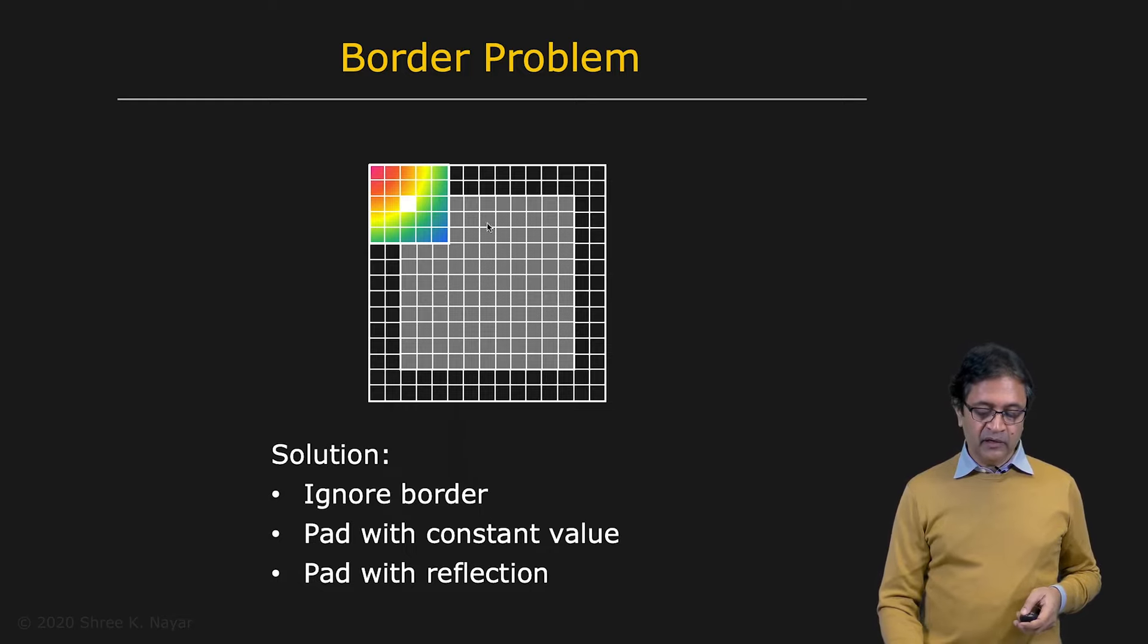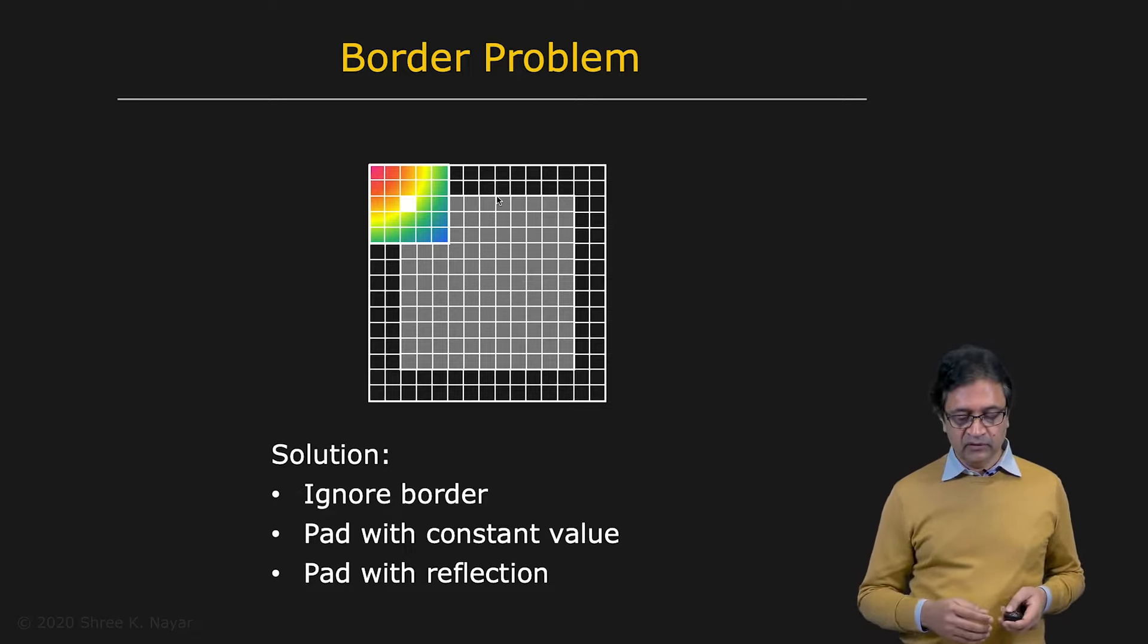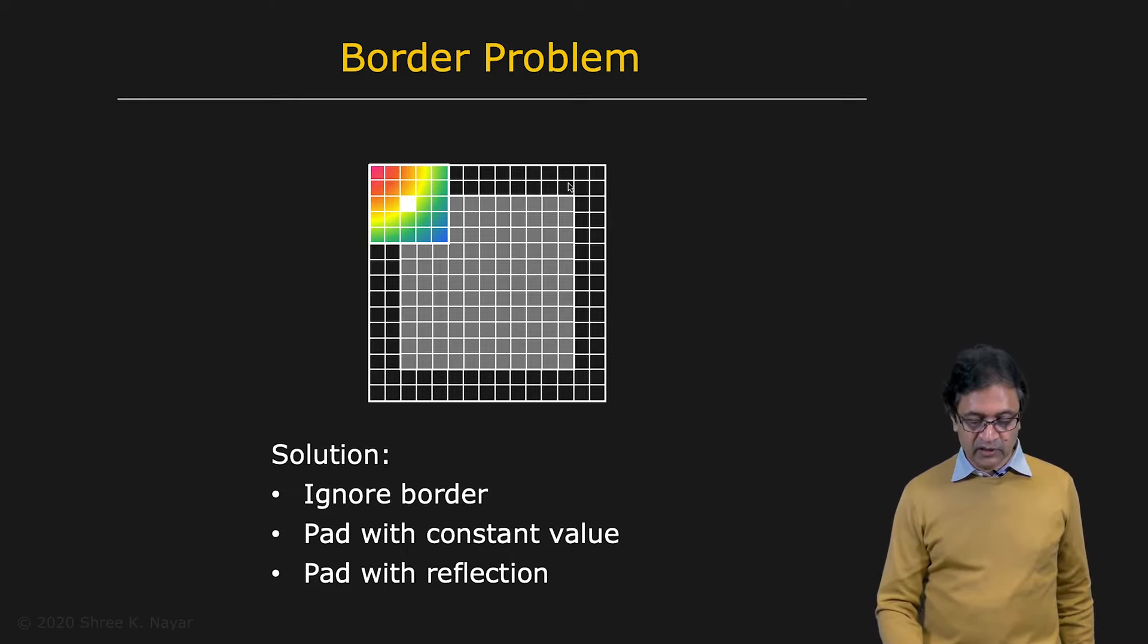Or you can pad this input image with, say, a constant value on the outside. Create some extra pixels on the outside, rows and columns. And you can pad it with, say, for example, the average brightness of the image. Just a constant value. What is often done is that it's padded with information which is essentially the reflection of the information inside. So these two columns here may be reflected to get these two columns. And the same with these rows and so on. In any case, it's a hack. Whatever you do, it's a hack because you simply don't have information in the region outside of the image.